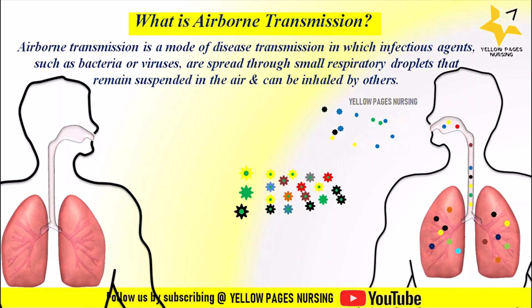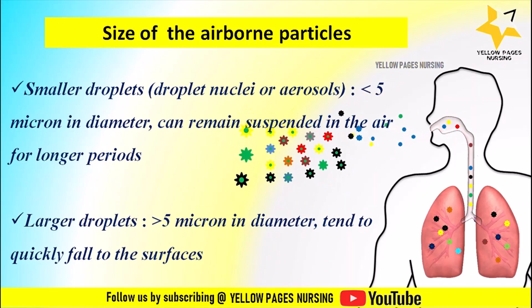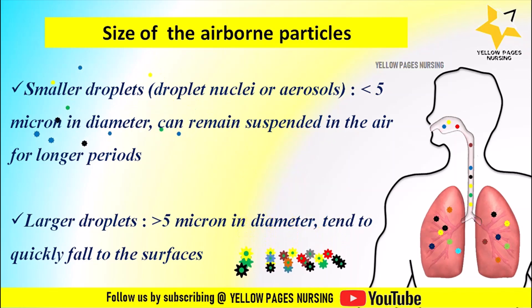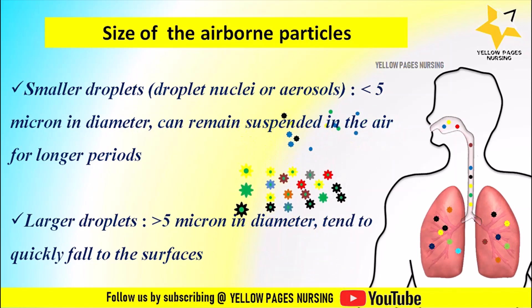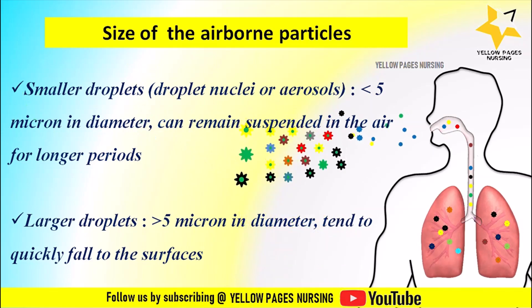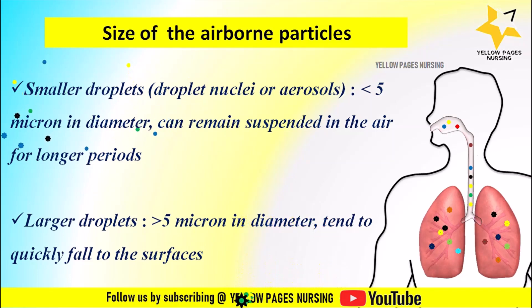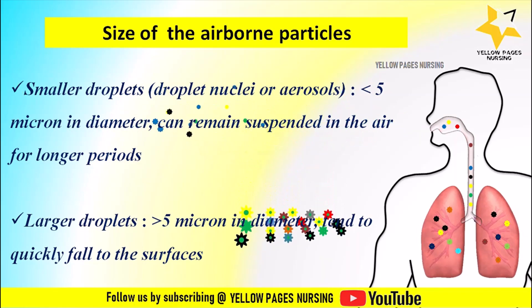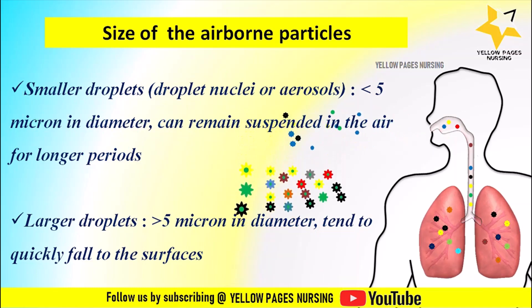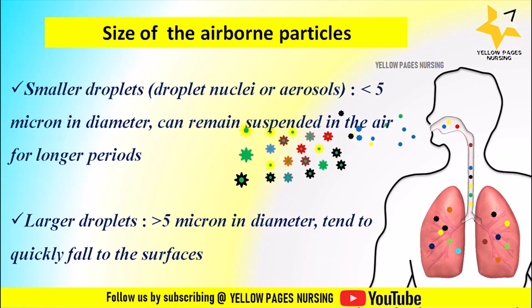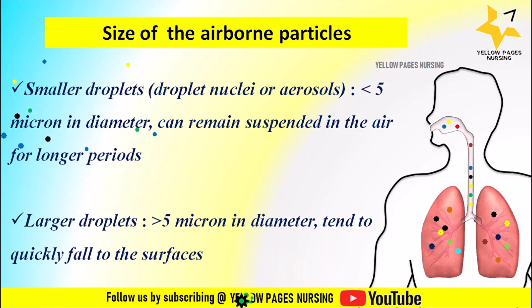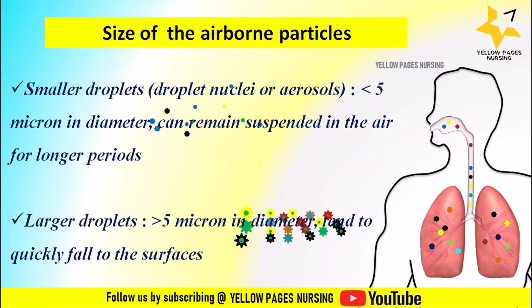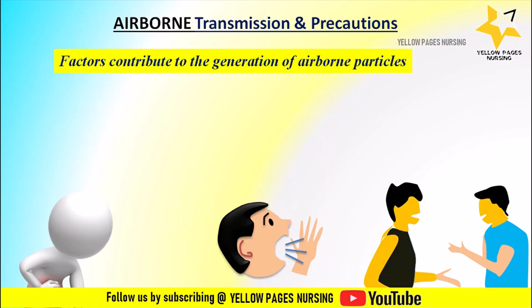Respiratory droplets are of various sizes as shown in the picture. Smaller droplets, called droplet nuclei or aerosols, which are less than five micrometers in diameter, can remain suspended in the air for longer periods and can be inhaled by others. Aerosols can travel over longer distances and reach deeper into the respiratory system. Larger droplets, greater than five micrometers in diameter, tend to quickly fall to the ground or surfaces within a short distance.